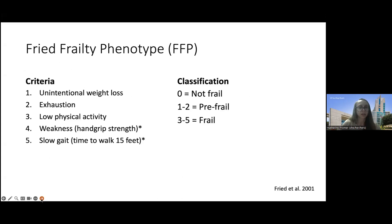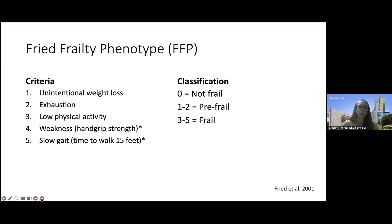The Fried Frailty Phenotype has five criteria: unintentional weight loss, exhaustion, low physical activity, weakness, and slow gait. The last two require specific equipment and staff expertise to measure accurately. You can be classified as robust (not frail) if you don't have any criteria, pre-frail with one or two, or frail with three or more.